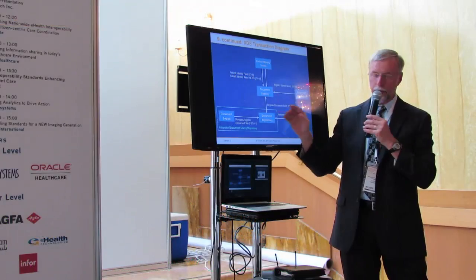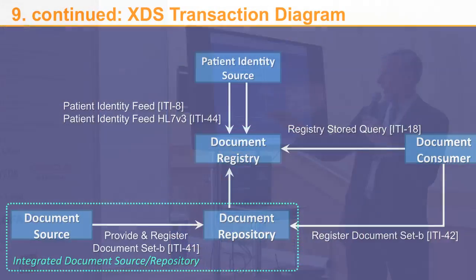You can go to the ITI part of the IHE specification — the ITI being the common infrastructure — look at transaction number 41, and see exactly what HL7 transaction is used and what the HL7 options and requirements are. From the document repository, you can go to the document registry, which could be a Health Information Exchange, using the Register Document Set transaction ITI-42. On the right side, the document consumer — for example, a physician — queries the document registry, defined in ITI-18 as an HL7 query message, and then retrieves the document set. A patient identity source at the top feeds information to reconcile different identifiers used between entities.